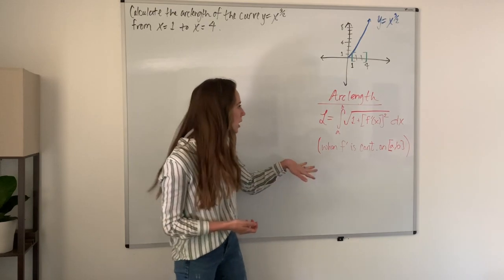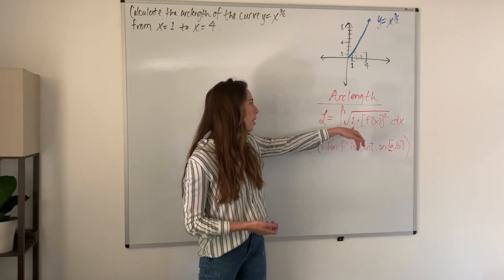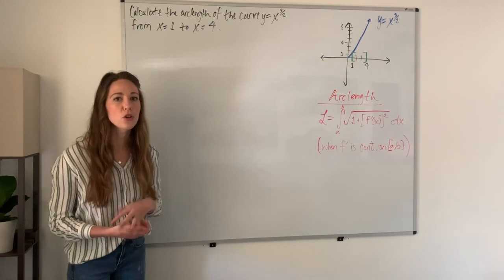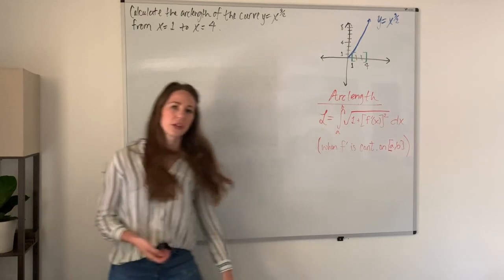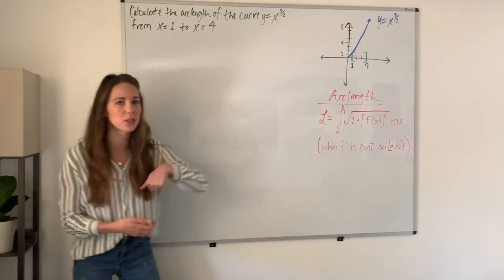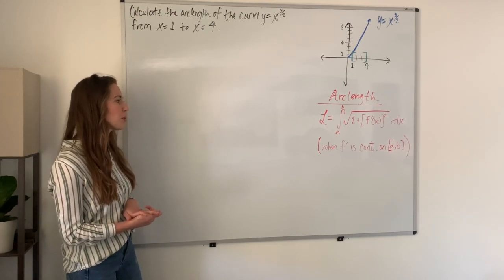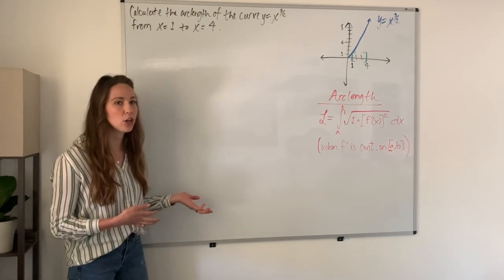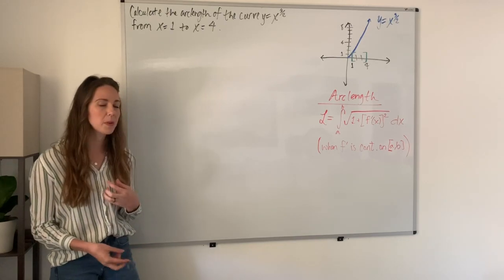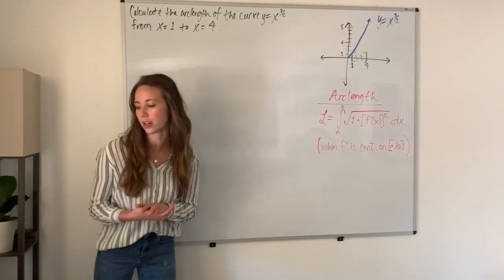We have the integral from a to b of the root of 1 plus the derivative of f of x squared dx. You might recognize this portion that's also on the surface area integrals. All we have to do for this problem is plug in what we have in the correct places and then solve that integral. There's not much new here as far as integrating goes. We're just applying a specific situation to integrals we already know how to calculate.